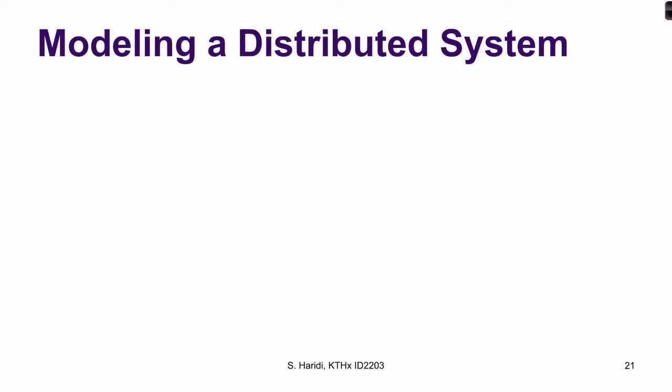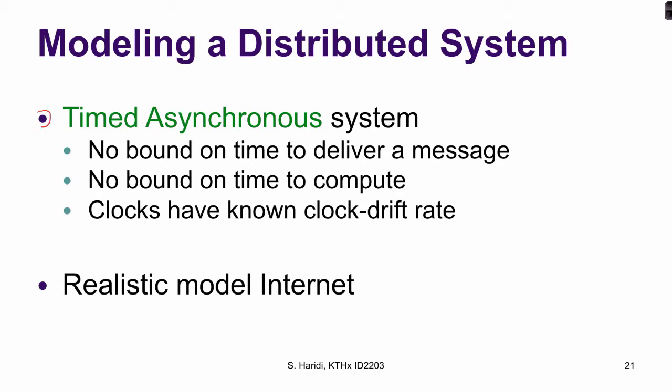There is still one interesting model we will discuss in part two of the course: the timed asynchronous system. Like an asynchronous system, it has no bounds on the time to deliver a message and no bounds on computation steps. But physical clocks associated with each process have a known clock drift rate. This is actually a realistic model, and we will see that with it we can solve some problems more efficiently than in purely asynchronous systems.